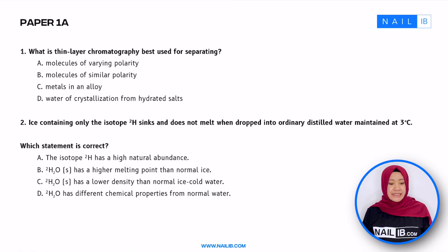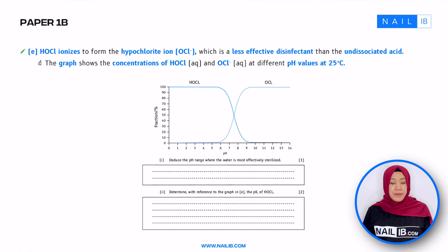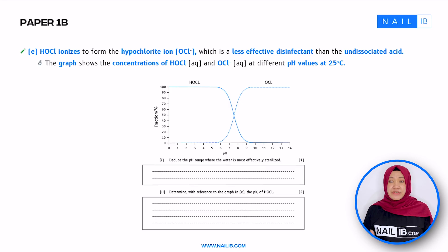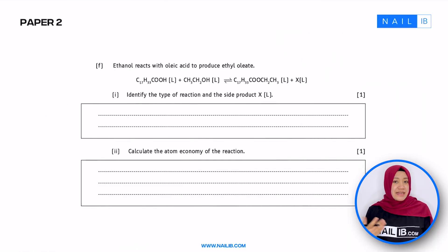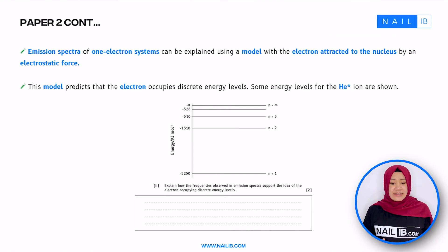This is how paper 1A looks like — normal MCQ questions with A, B, C, D options. And this is how paper 1B questions look: you need to know how to interpret a graph and read data from it. Another type of question involves an experiment you're familiar with — here you need to identify two control variables. For paper 2, as mentioned, it has two types of questions: short answer questions you can answer directly or briefly, and questions that need more explanation and analysis for a longer answer.